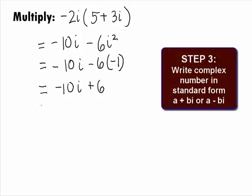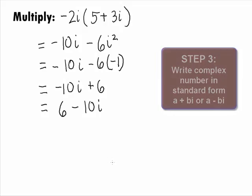In Step 3, we want to write the final answer in standard form. Note that the standard form of a complex number is a plus bi or a minus bi. So, our final answer in standard form is 6 minus 10i.